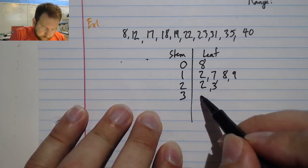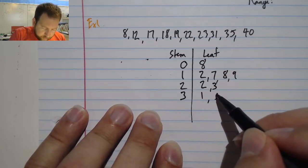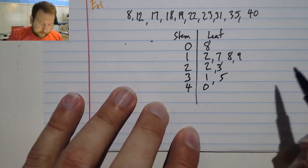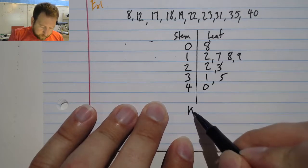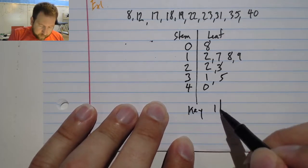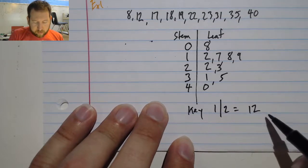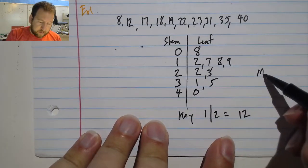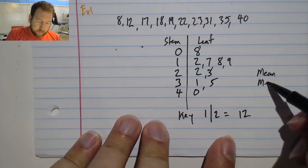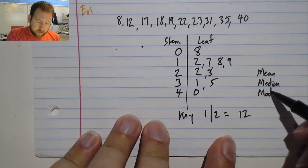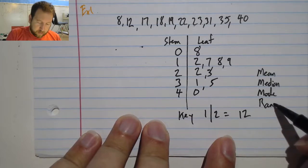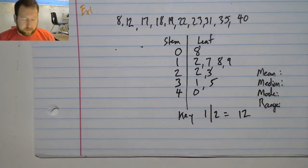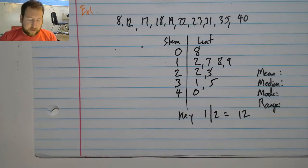My numbers with a thirty, thirty-one, thirty-five, and finally forty. And I'll do my key. One dash two equals twelve. There we go, and I can go on to answer my mean, median, mode, and range. Alright, that's pretty much it. Should be able to figure it out from there. Go ahead and good luck.